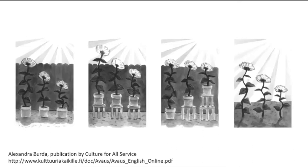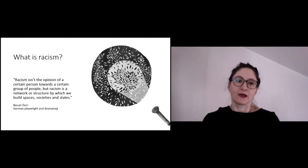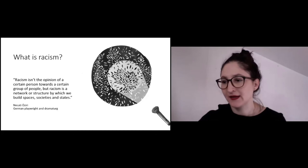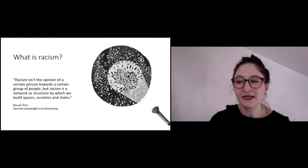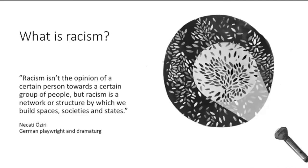I'd like to continue speaking about that fence that was taken away in the last image. On my next slide is the question: what is racism? This is a word that is a little frightening, but it's important to talk about. I have a quote by the German playwright Necati Osiri: 'Racism isn't the opinion of a certain person towards a certain group of people, but racism is a network or structure by which we build spaces, societies and states.' So really it's this fence — these walls in society that clearly say who can go into a space and who can't.